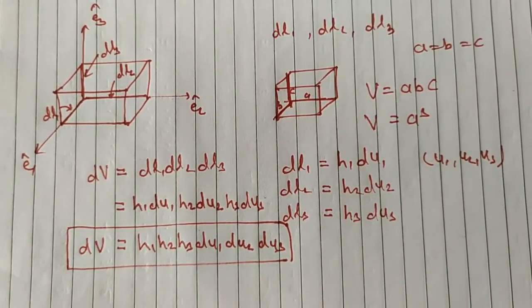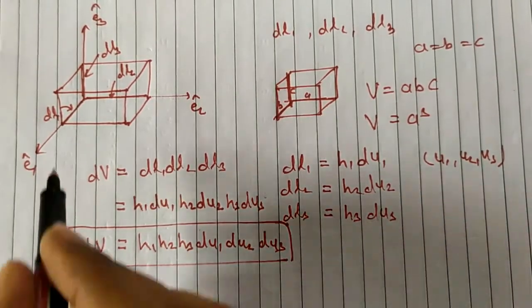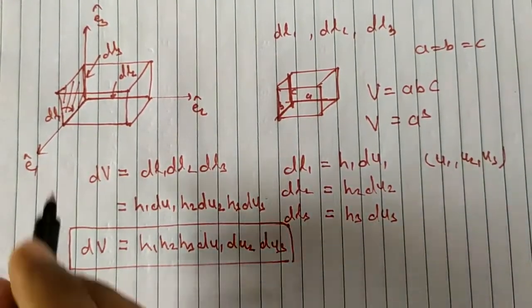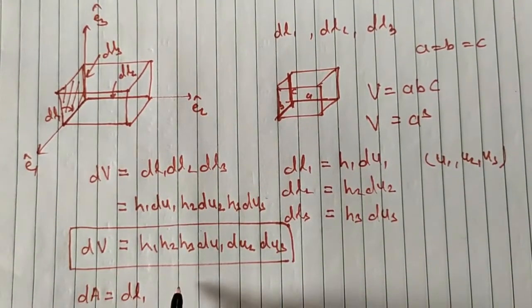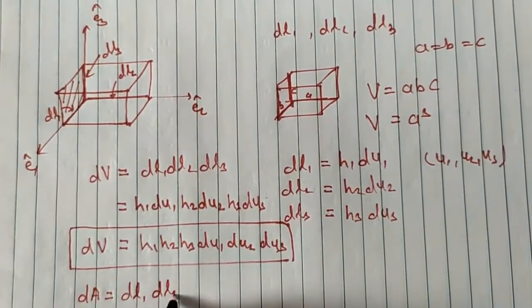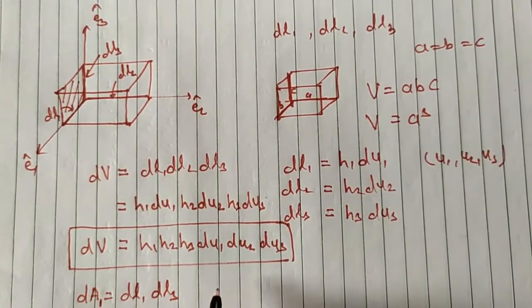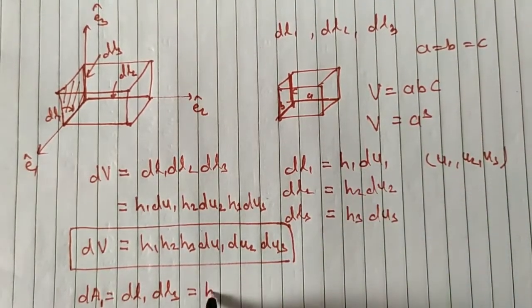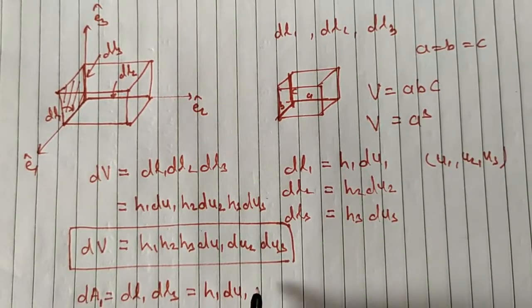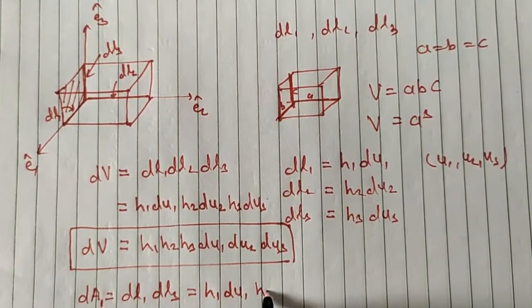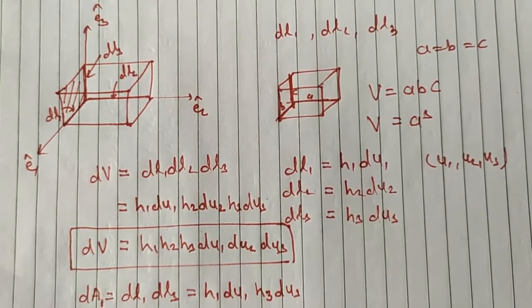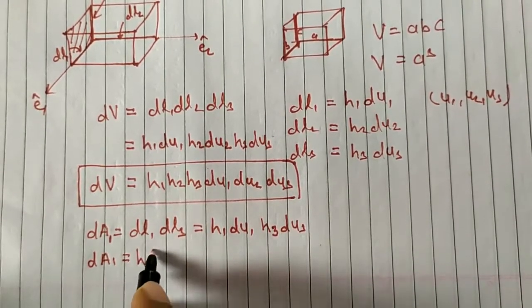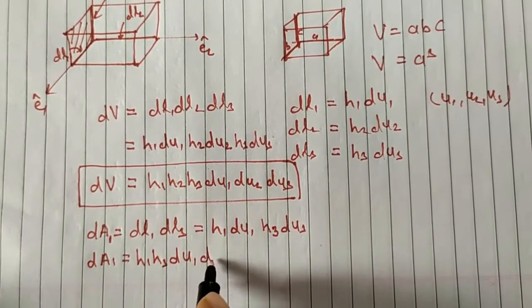Similarly, I can find the area element. If I am interested in finding the area of a face with sides dL1 and dL3, I call it dA1. Then dA1 = dL1·dL3 = h1·du1 · h3·du3.